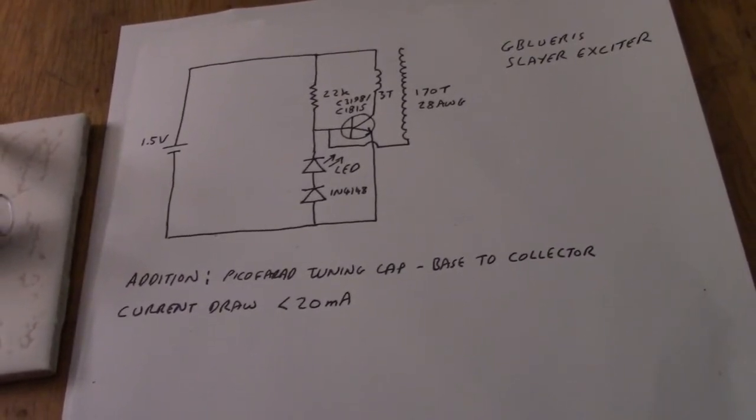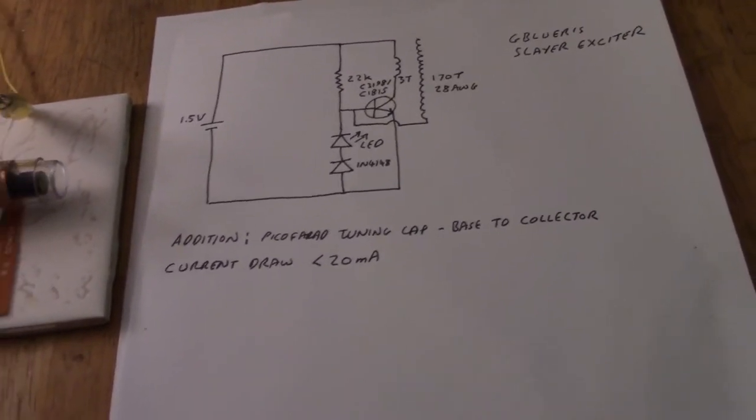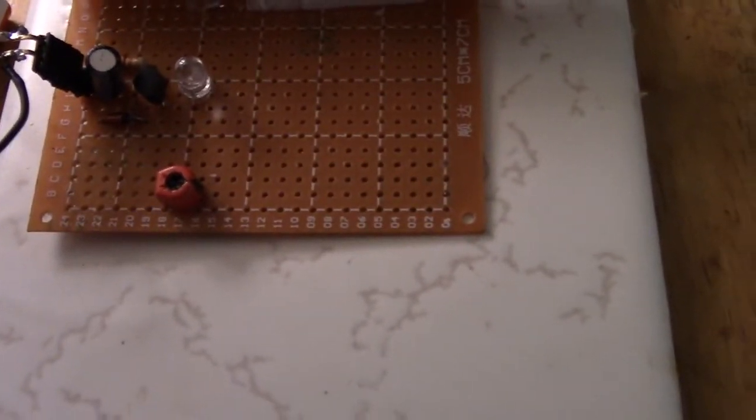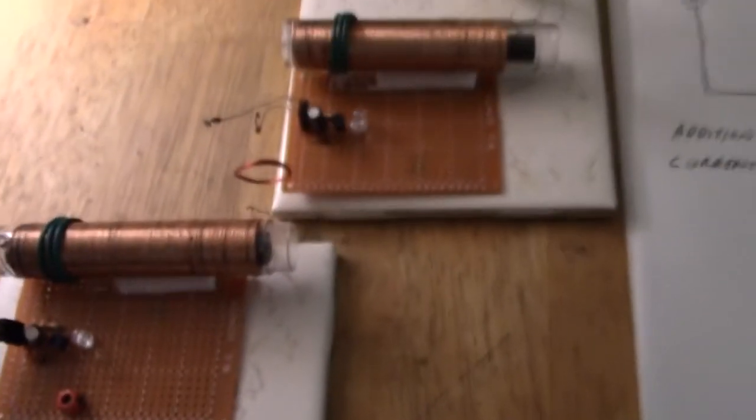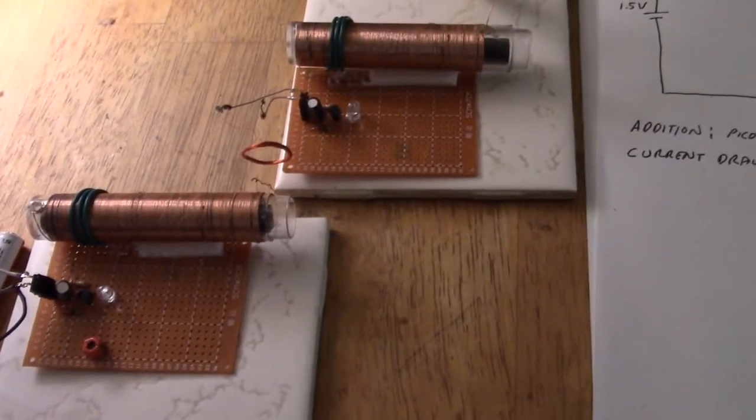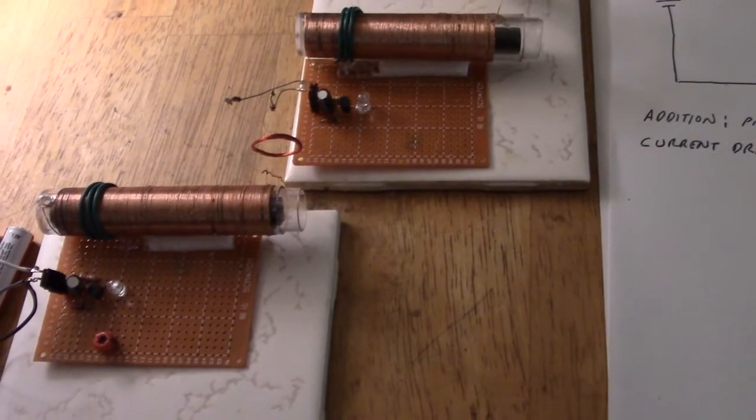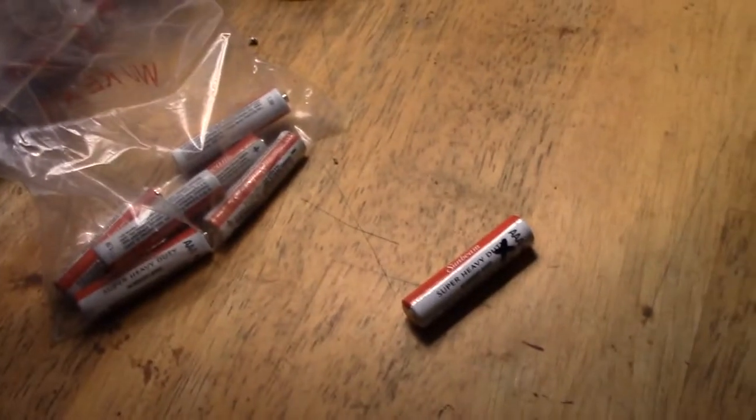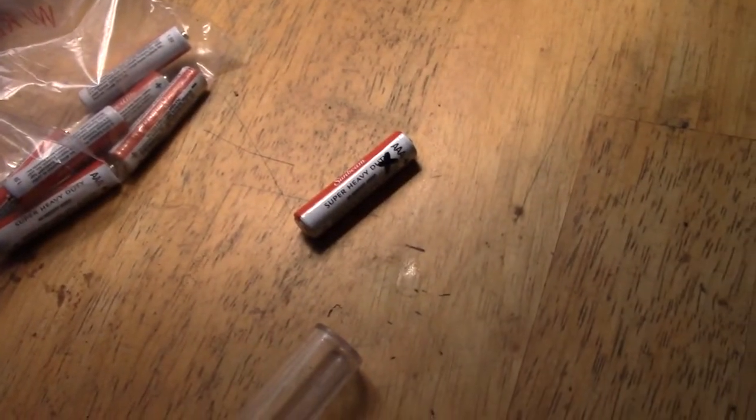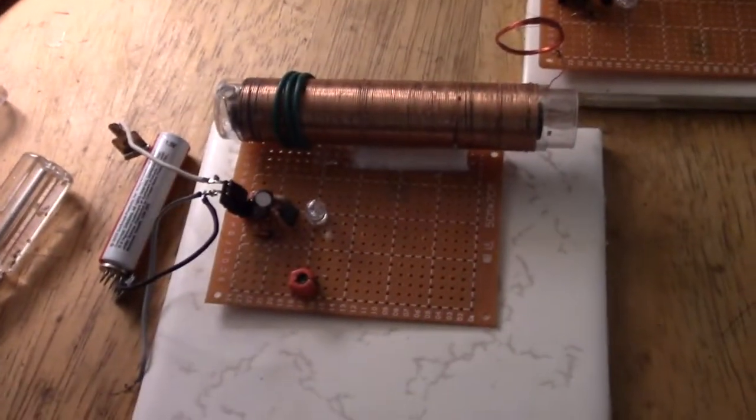But what I've added is a picofarad tuning capacitor from the base to the collector of the transistor. There it is there. I haven't actually got two of them which will be one of the upgrades I'm hoping to post. But these two circuits are exactly the same and the idea was to get a low current circuit to work. So I could reuse these, this is a bag of AAAs that are no good anymore. This one with an X on it is down to 1.2 volts and they're all very low so they work on an IMH as well.